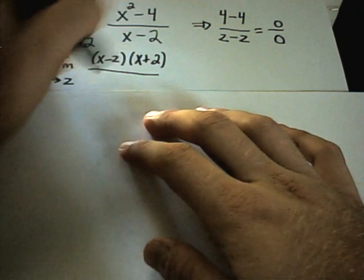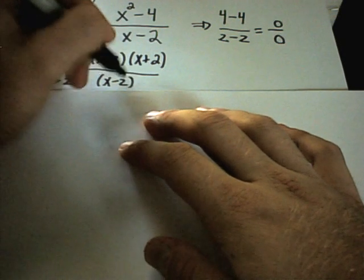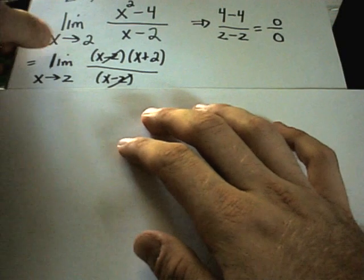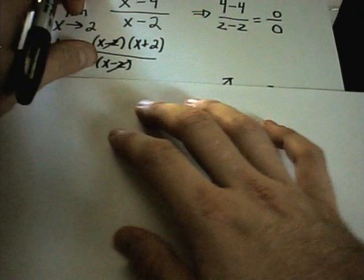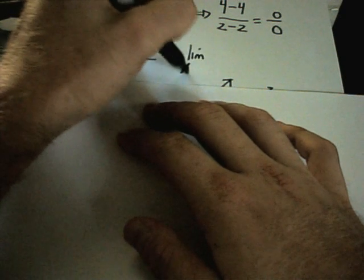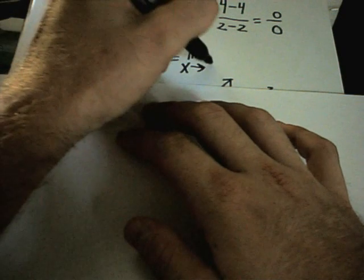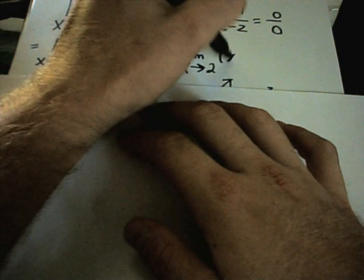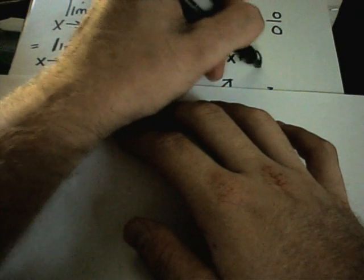Well, I have this x minus 2 on the bottom. I can cancel that out. And this is what you do with limits. You try to do something algebraic so that you can simplify them. And then you basically just repeat the plug and chug process. You try to plug the number back in again, and hopefully you'll get a solution.